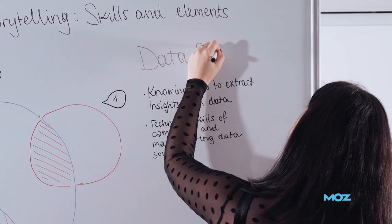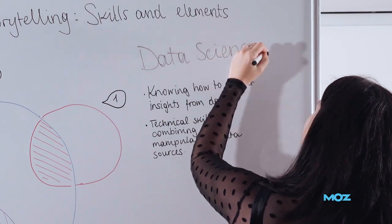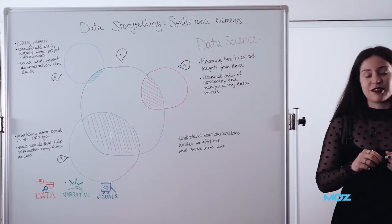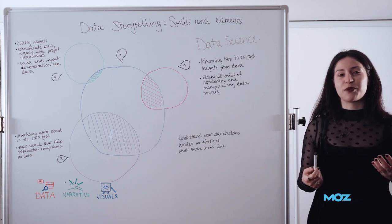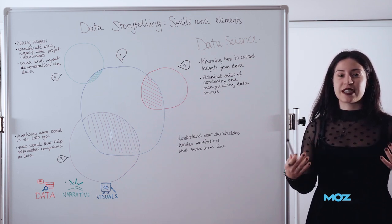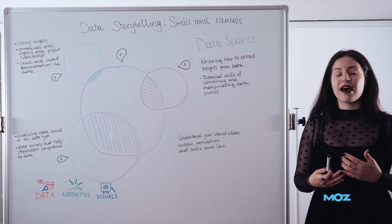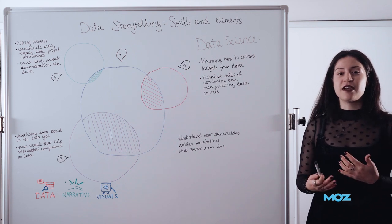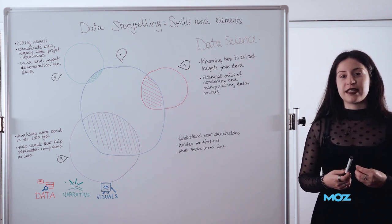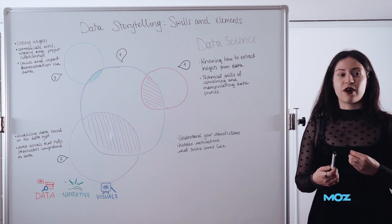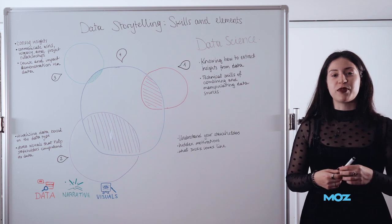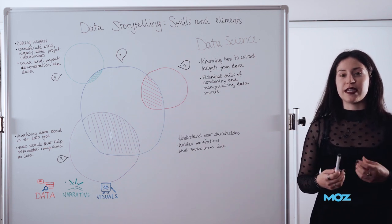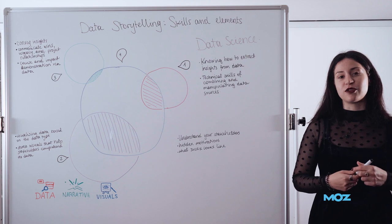So the first component of data storytelling is data science. Data science is all about knowing what insights you want to extract from your data, but it's also about the technical skills that you need as a consultant or a marketer in order to extract that data. So it combines a little bit of data analysis, a little bit of data engineering, but it's all about knowing what data you need in order to tell a good story.